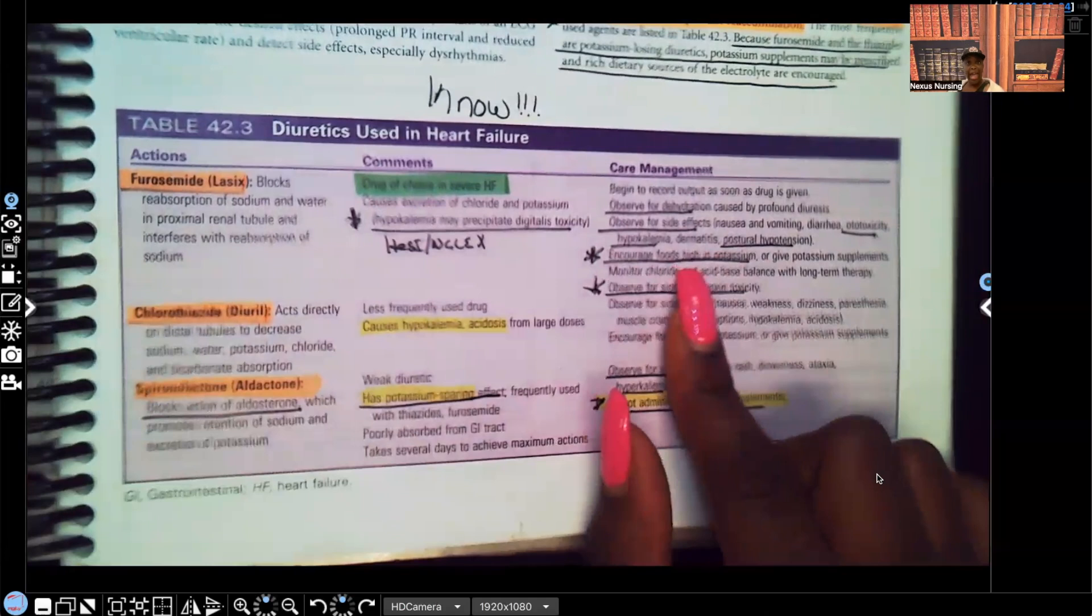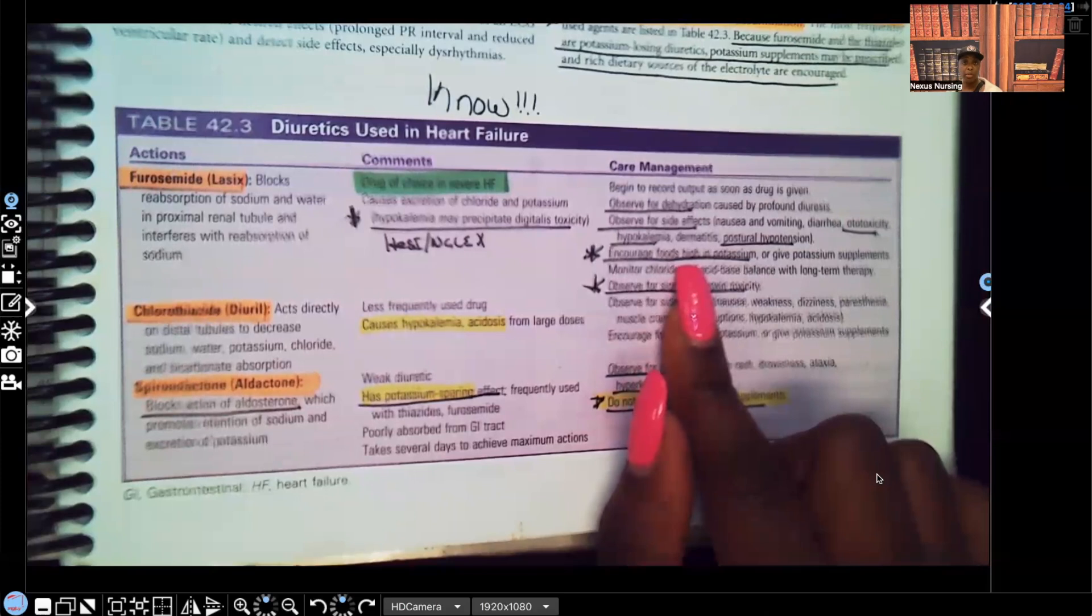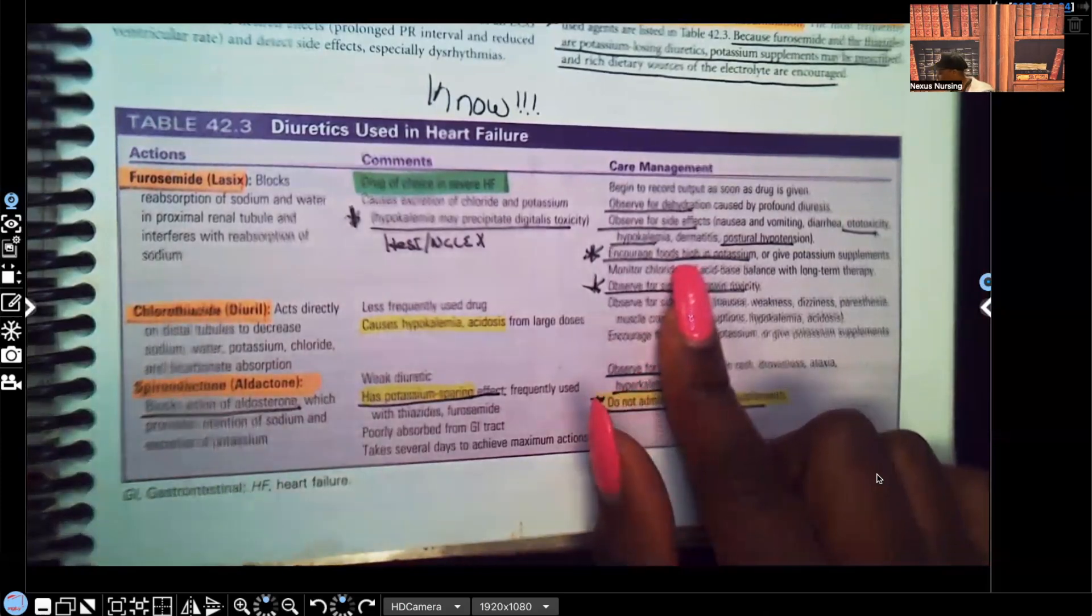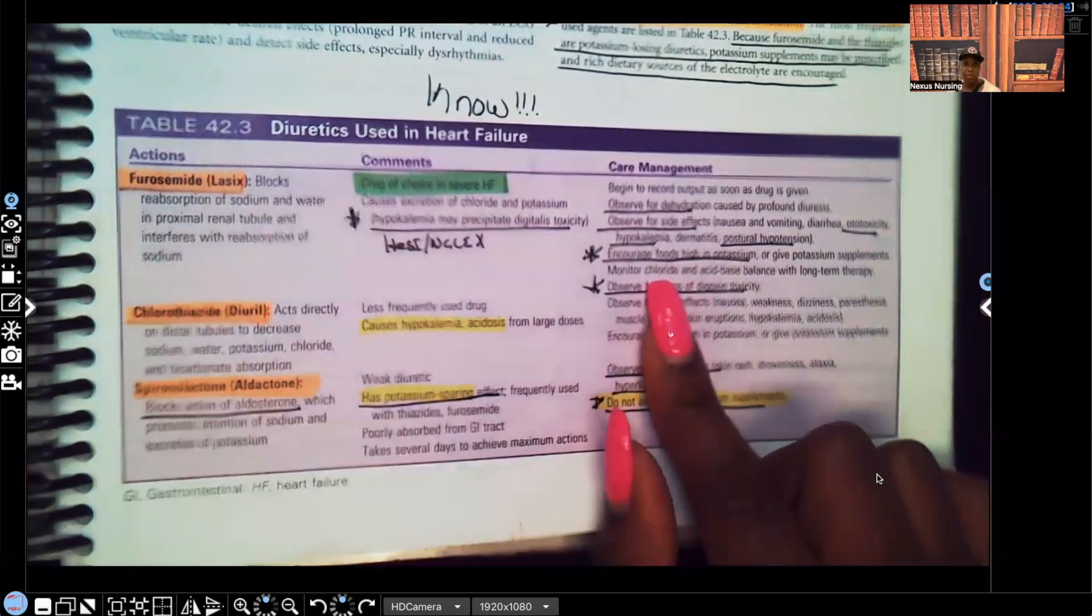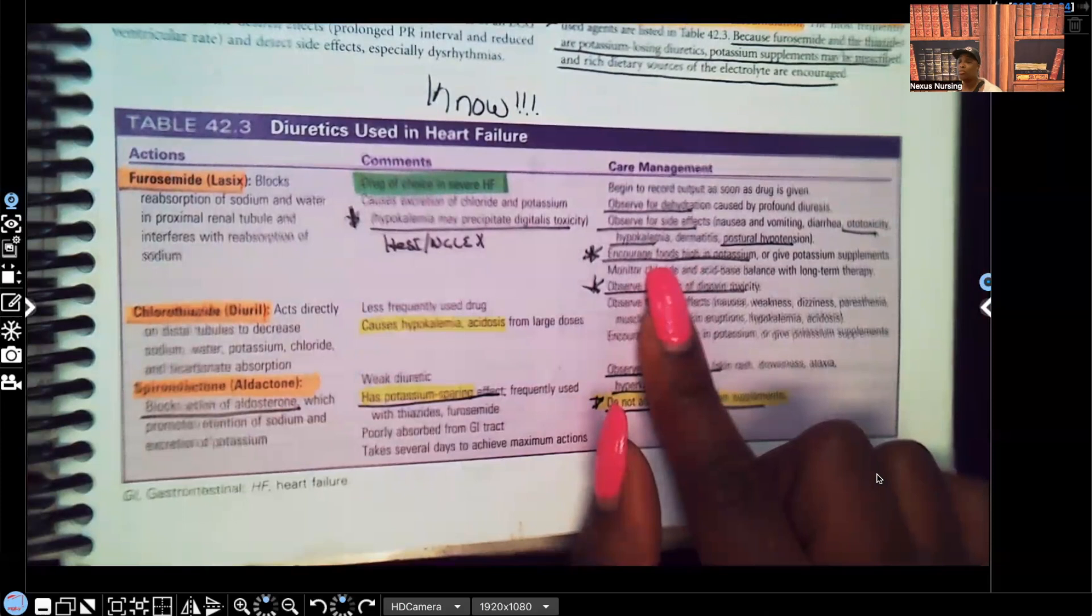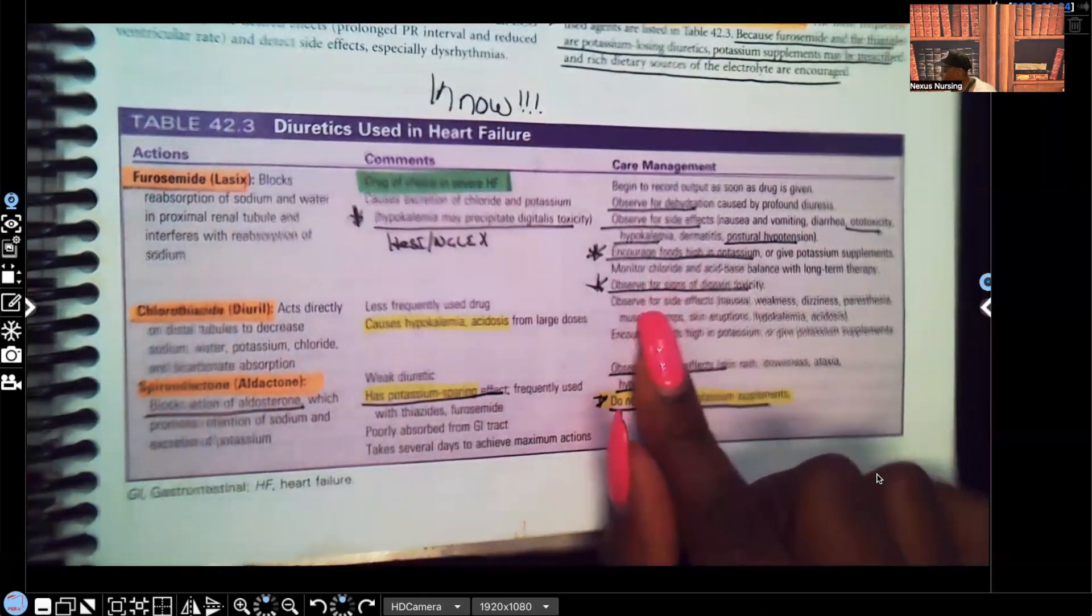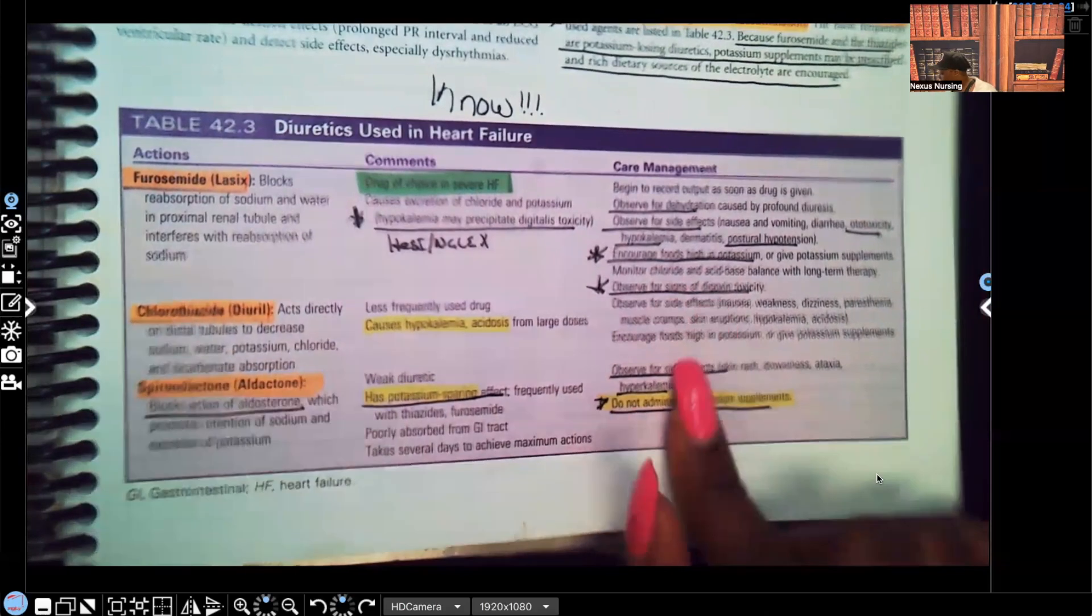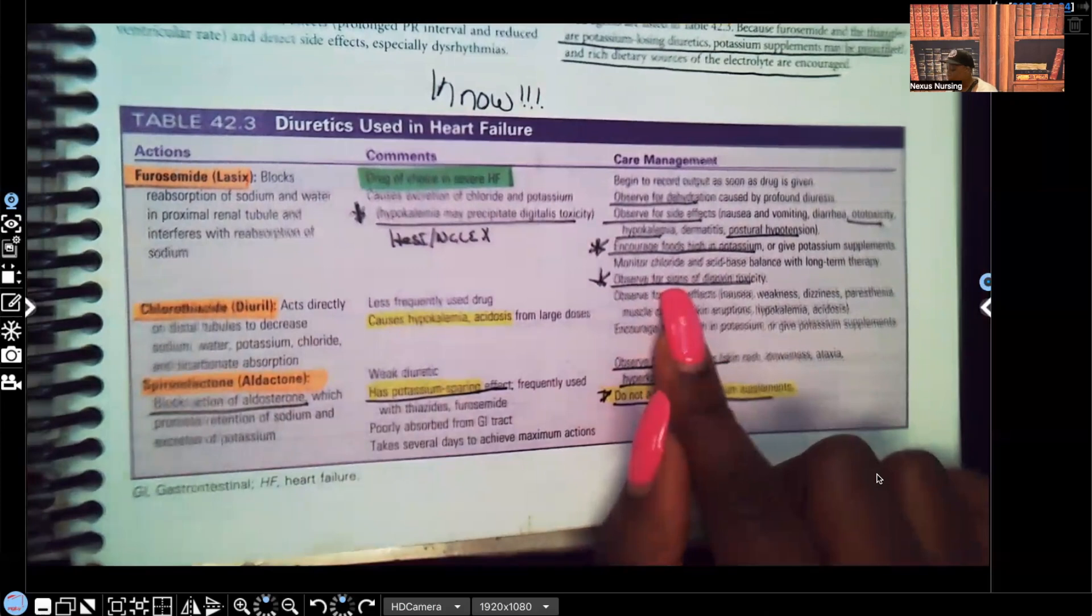You're going to encourage foods high in potassium, and that makes sense because we know that this type of diuretic will drop that patient's potassium and we can't afford for their potassium to be dropped more than 3.5. So we're going to encourage foods high in potassium, we may give them potassium supplements as needed. By the way, I put a star next to that because that is a test question I've seen over and over again. Make sure you know it. You're going to monitor for chloride and acid-base balance. You're going to observe for signs of dig toxicity, very important.